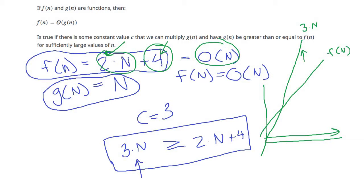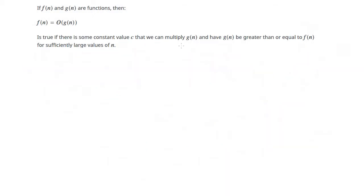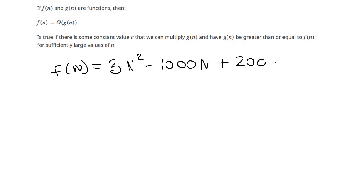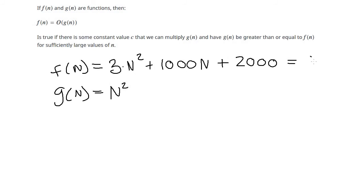Let's pull up another function. This time let's pick f(n) = 3n² + 1000n + 2000. What we want to do is simplify this, ignoring what we don't care about while maintaining how it grows as n increases. So for g(n) we'll say it's just n², meaning f(n) = O(n²). The definition of Big O lets us ignore the 1000n term, the 2000 constant, and the coefficient 3.